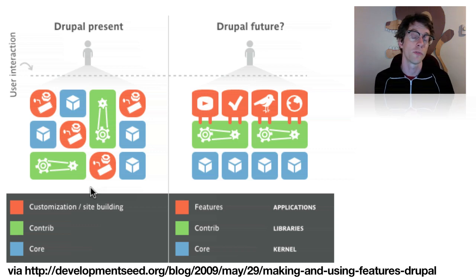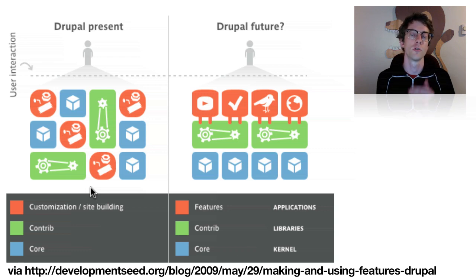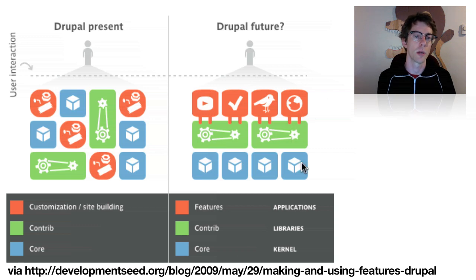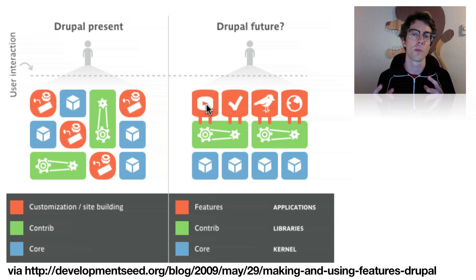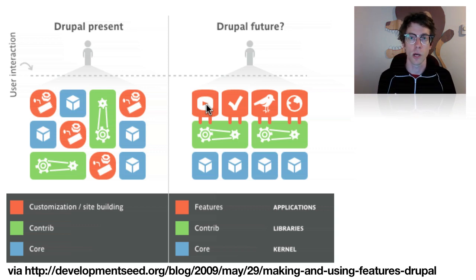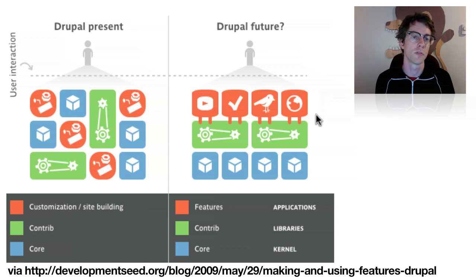What the Features module does is try to aid us in the process of drawing a line between these items. As you can see on the right, here we have actual modules underlying — maybe here are the core modules. Features, on top of these, is kind of like organizing these components. It's a module itself, but a module with a specific use case it's trying to satisfy. This picture lends itself to thinking about Lego building blocks.